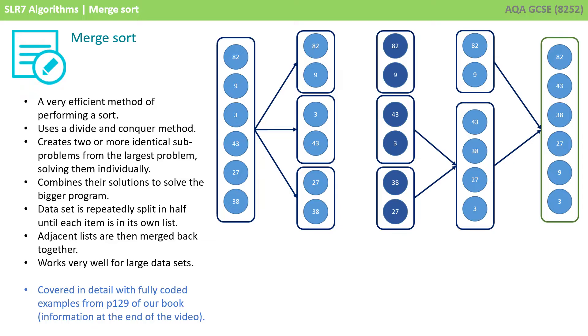The merge sort, although it's much harder to program, is definitely more efficient because it can work on multiple lists at the same time. It uses a divide and conquer method.